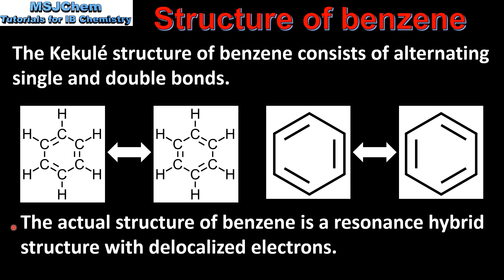However, the actual structure of benzene is a resonance hybrid structure with delocalized electrons. Next we'll have a look at some reasons why the Kekulé structure of benzene with its alternating single and double bonds does not accurately represent the bonding in benzene.